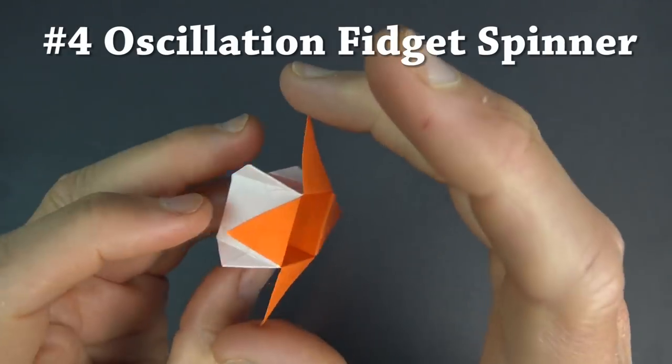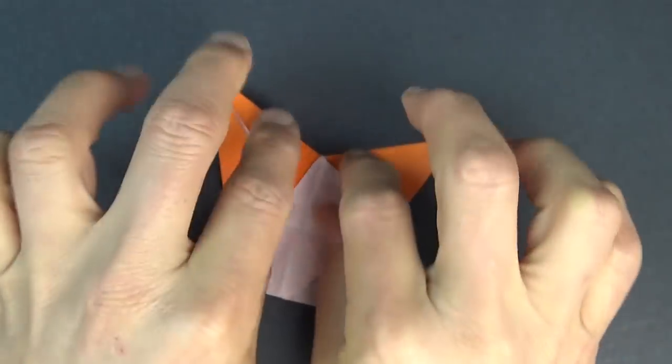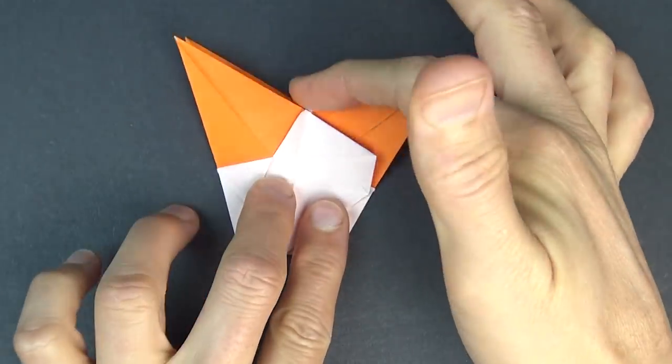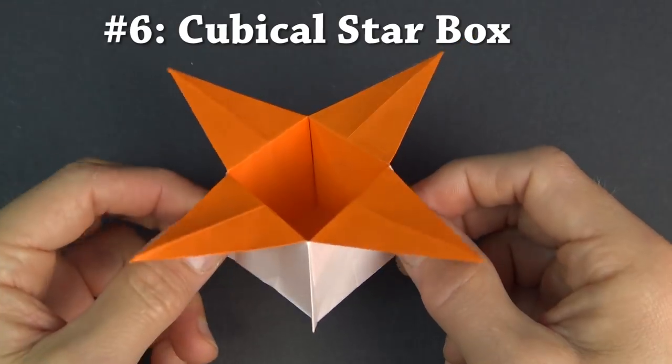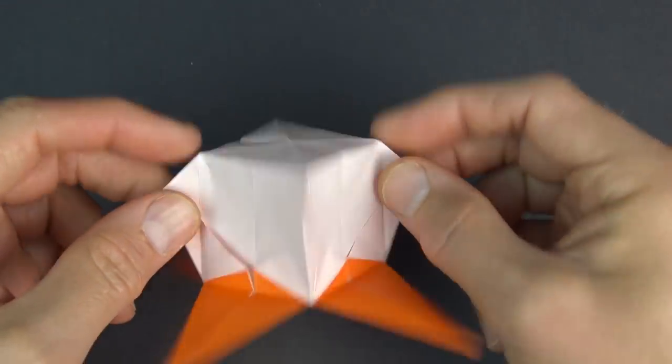You can make the oscillation fidget spinner and flatten it like that, and then to turn it into a star you just fold the two flaps down. Hey guys, what's up, Jeremy Schaefer here. In this tutorial I'm going to show you how to fold this cool cubicle star box kinetic toy.